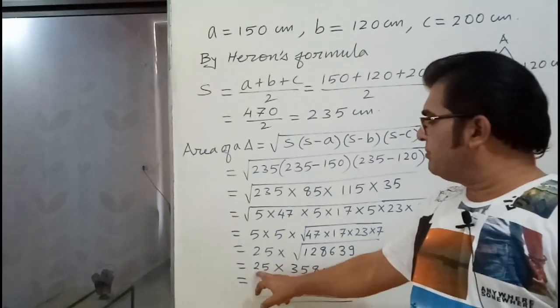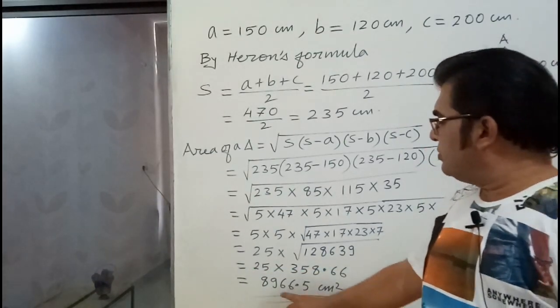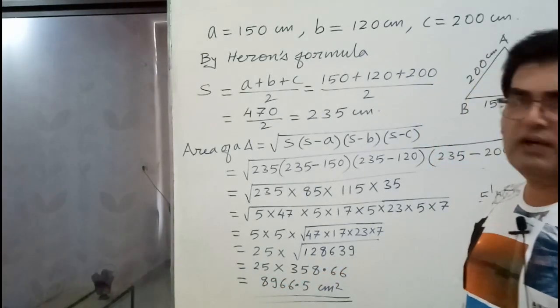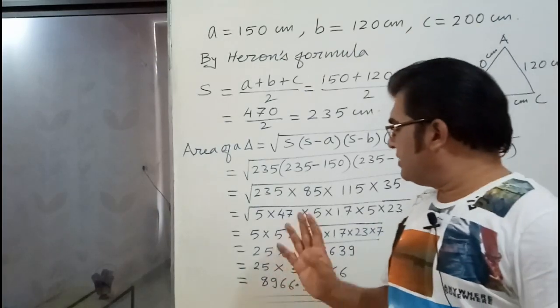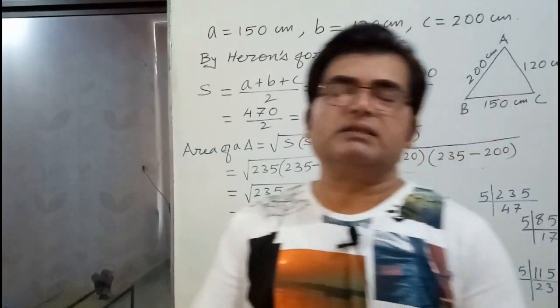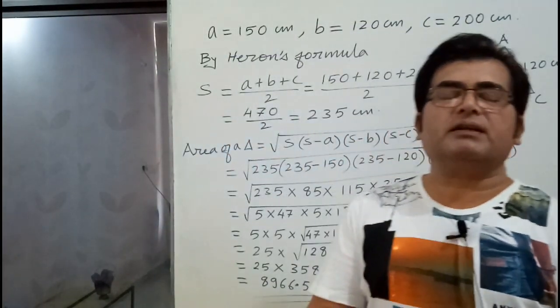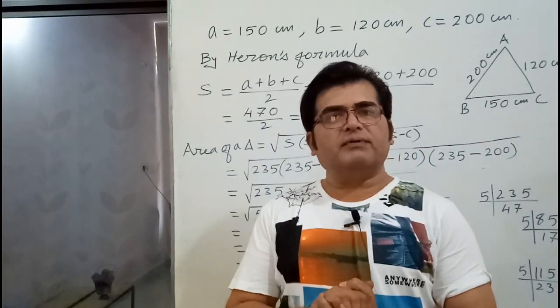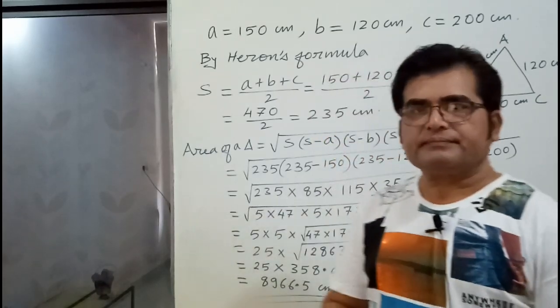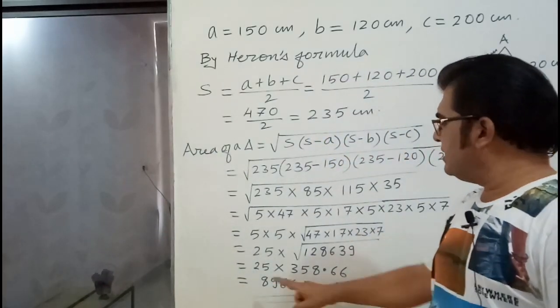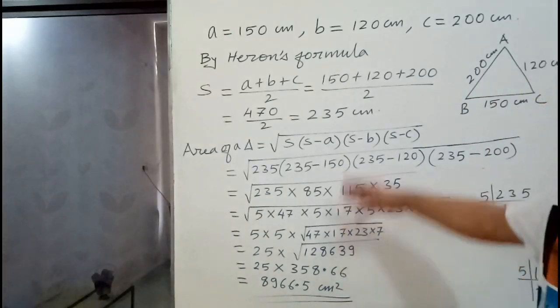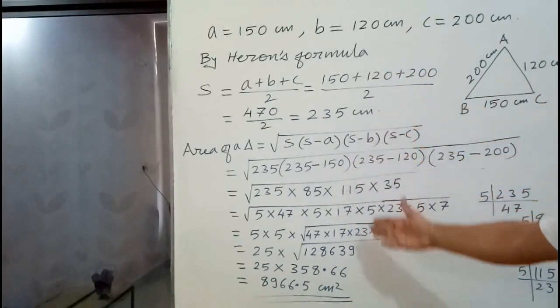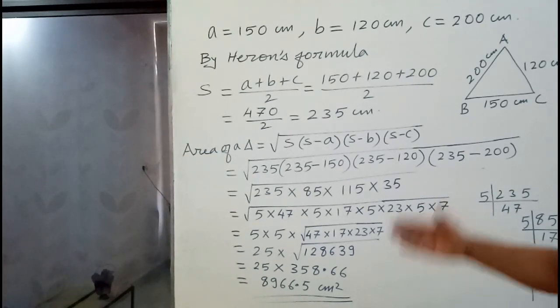Then, this you have to multiply with 25. So you will get 8,966.5 centimeters square. 8,966.5 centimeters square is the answer. The area of a triangle.